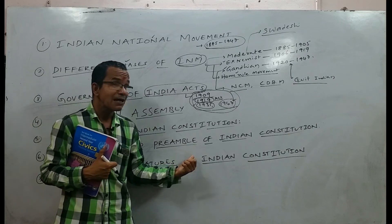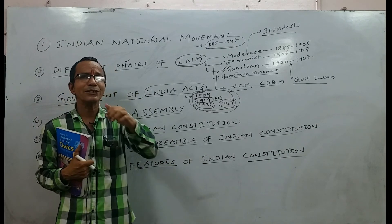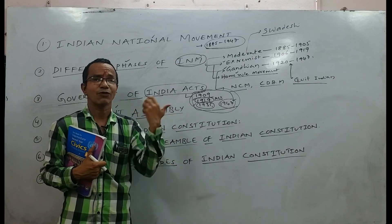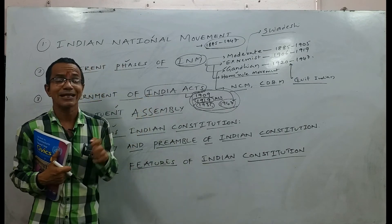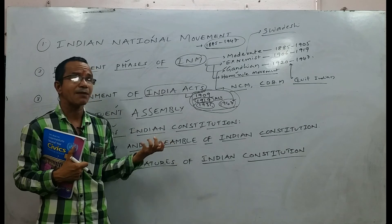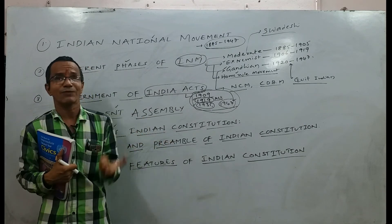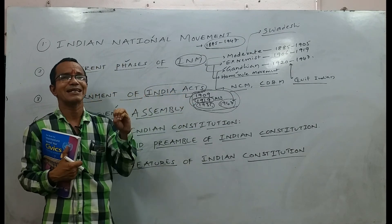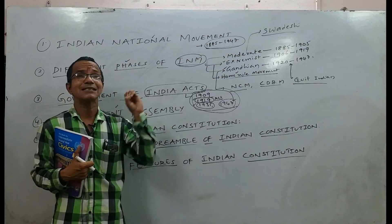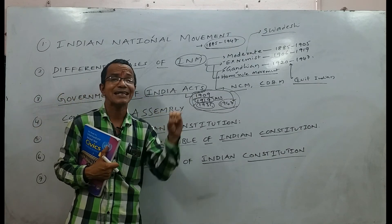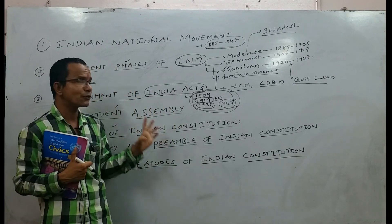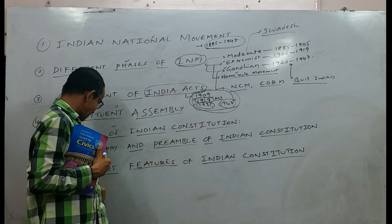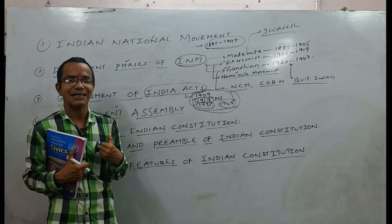The Preamble was prepared under the objective resolutions introduced by Jawaharlal Nehru in the first meeting of the Constituent Assembly. The Preamble starts with 'We, the People of India.' In this way, it gives importance to people's sovereignty and provides popular sovereignty to the people of our country.